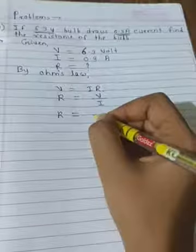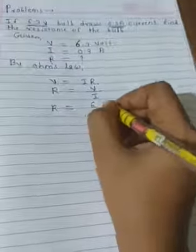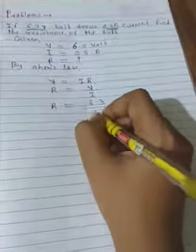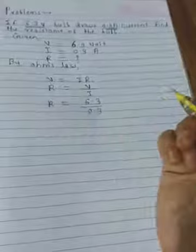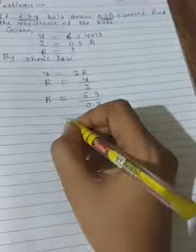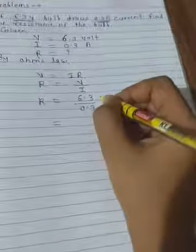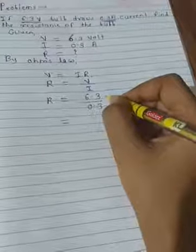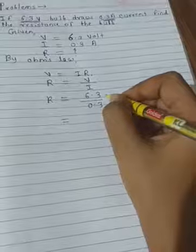Therefore, R is equal to 6.3 upon 0.3. We can multiply it by 10 by 10.